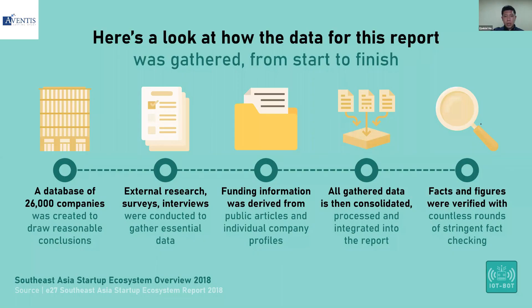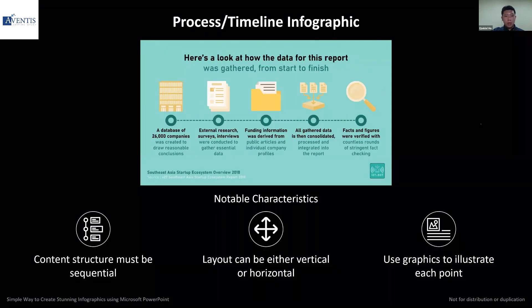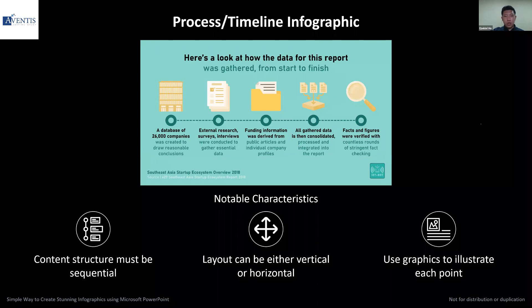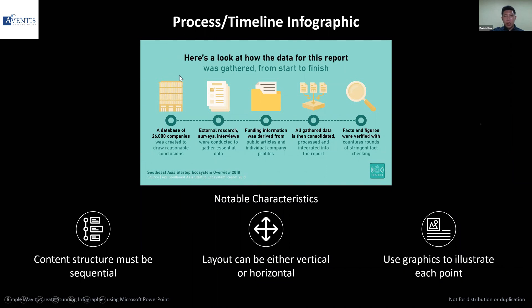The last of the most common types is the process or timeline infographic. This is very useful if you're demonstrating a process from step one to the finish, or even a timeline — maybe you're talking about the history of something from the 1960s to present. For this one, the layout can be either vertical or horizontal, meaning it depends on whether you want to use a landscape or portrait orientation for the design.